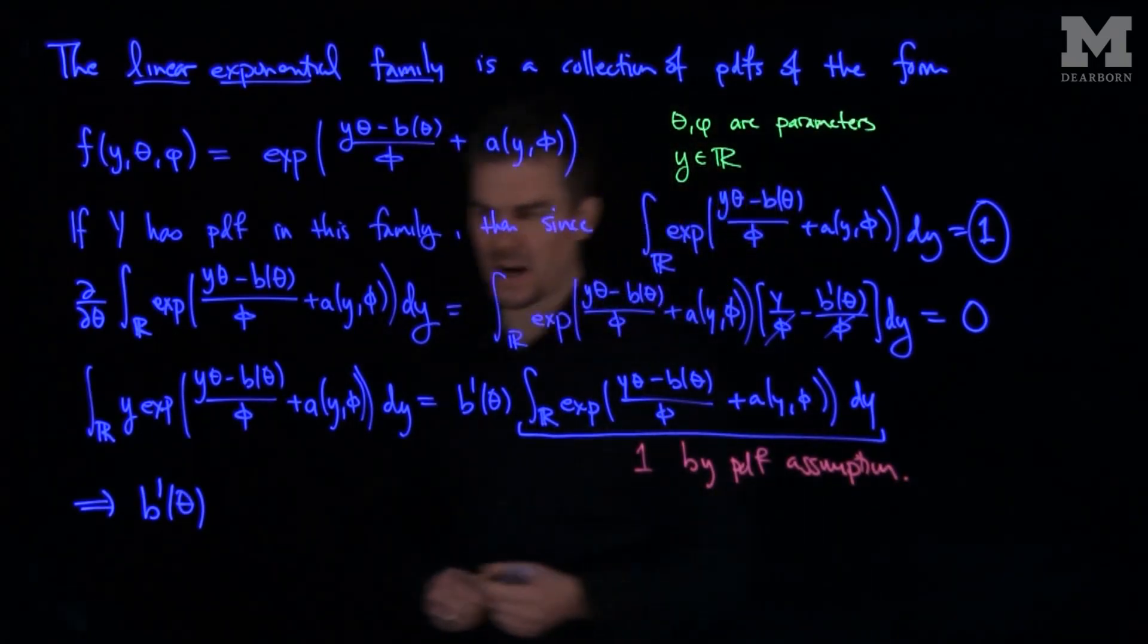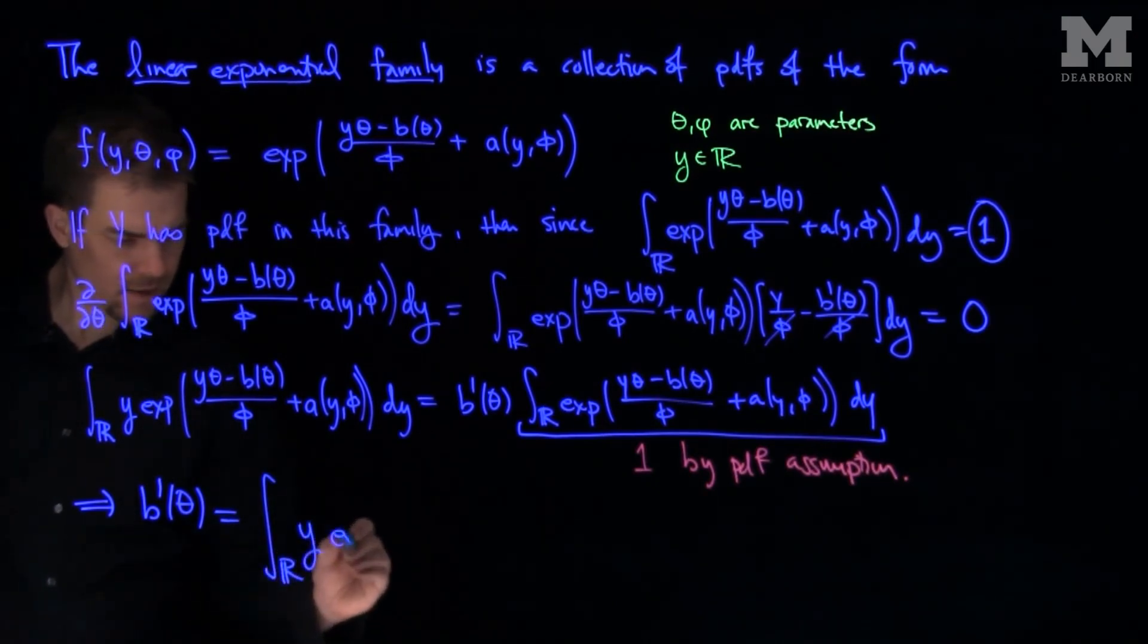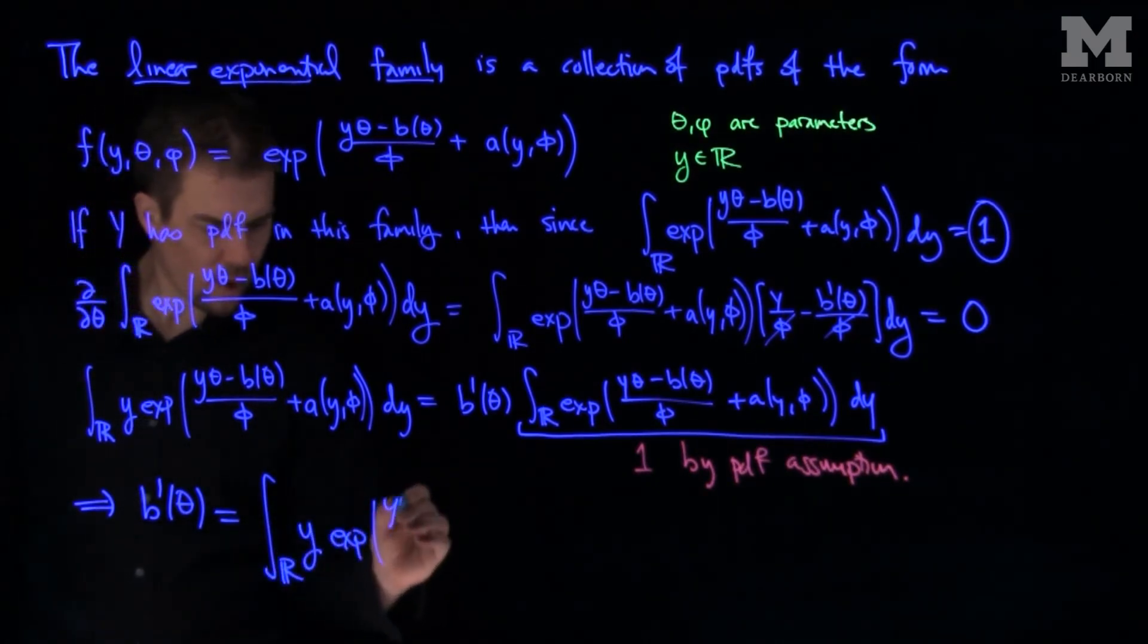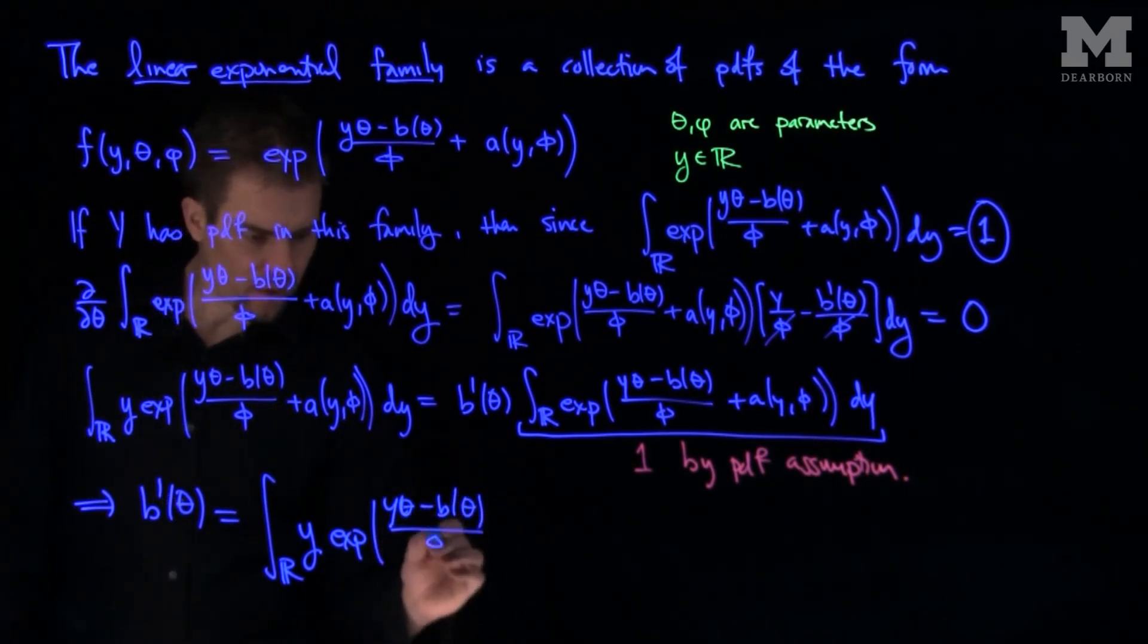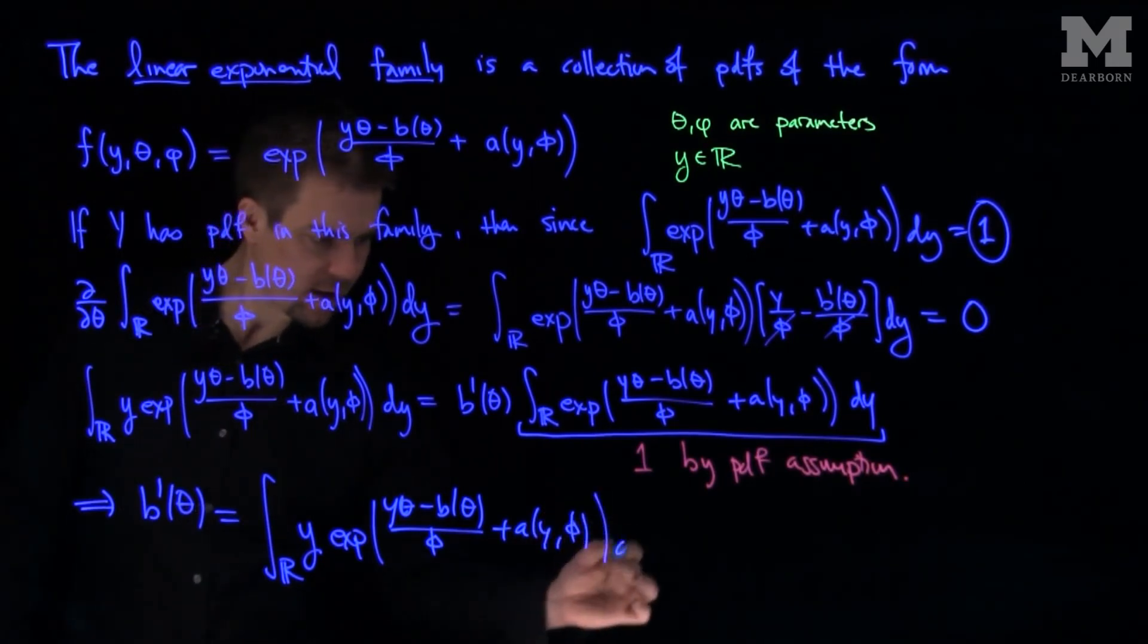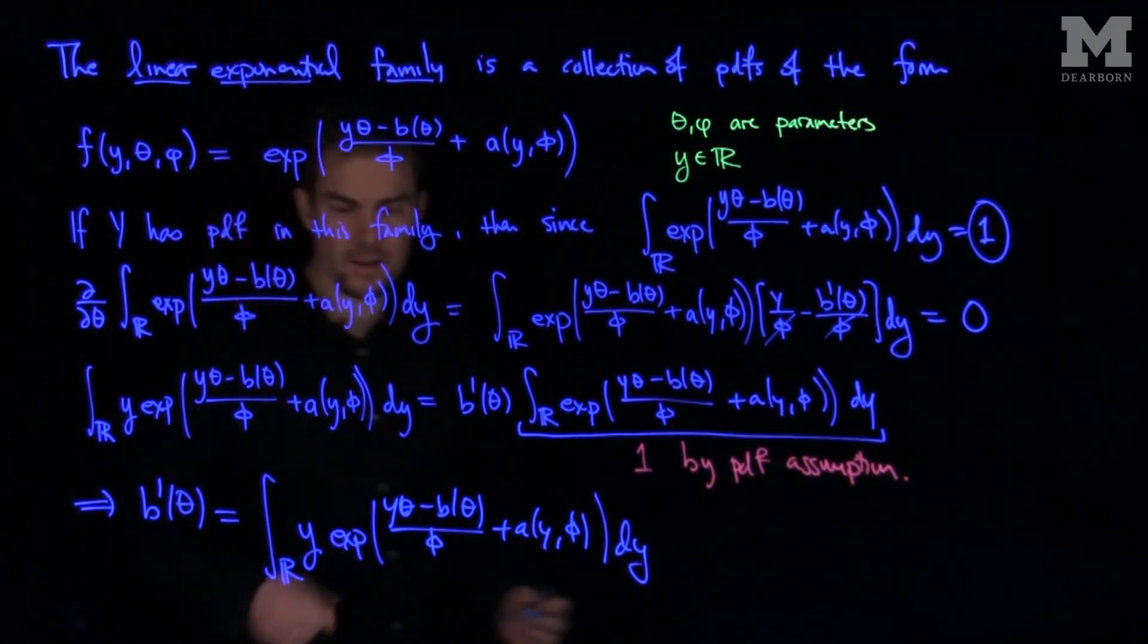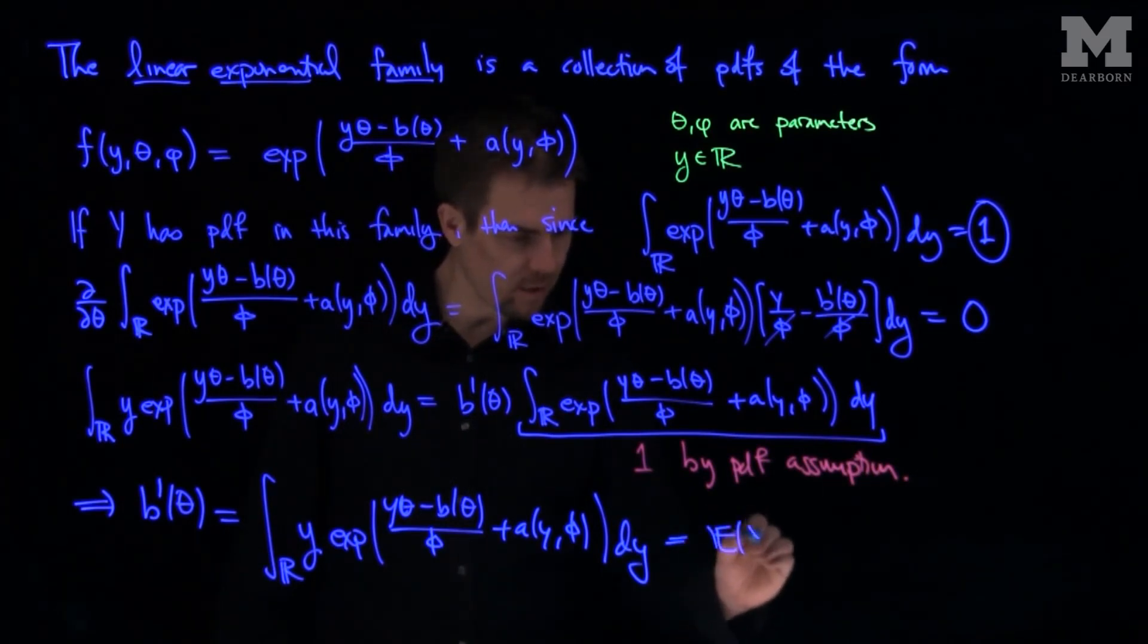Therefore, b'(θ) equals the integral over ℝ of y times exp((yθ - b(θ))/φ + a(y,φ)) dy, which is exactly the expected value of Y.